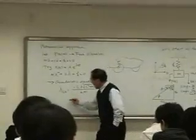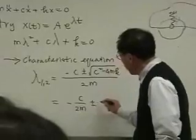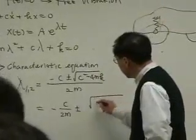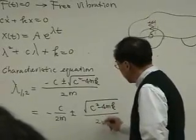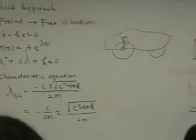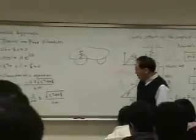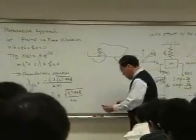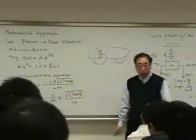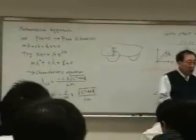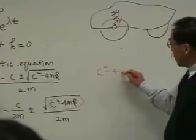So then I will write this C over 2 that. Now I have a 2 term. Okay, what happens if this one is zero? What does it mean by that? Let's look at C squared minus 4mk.